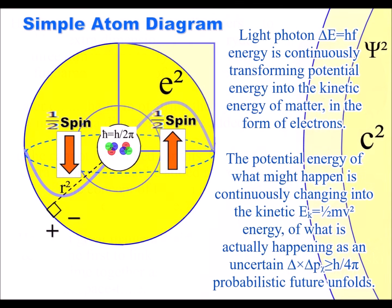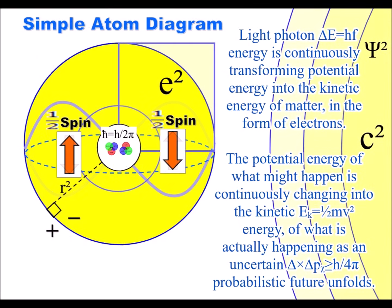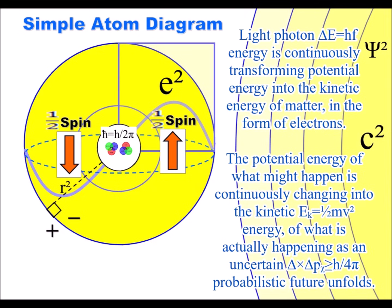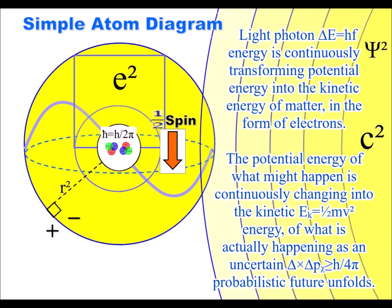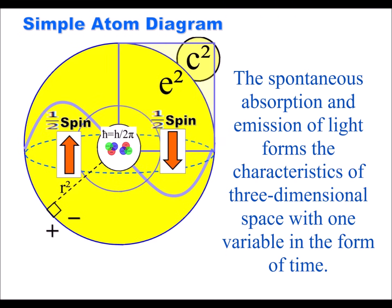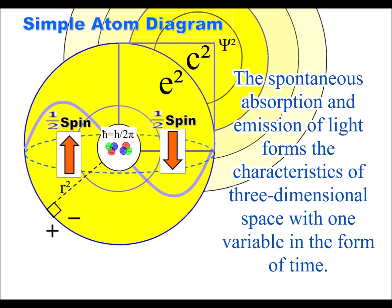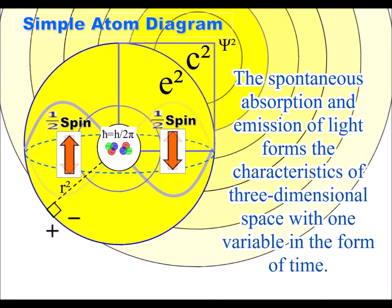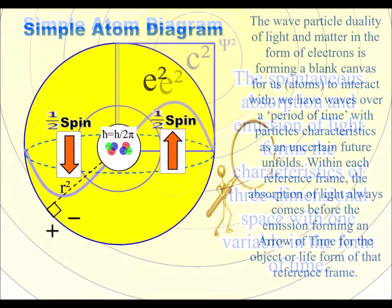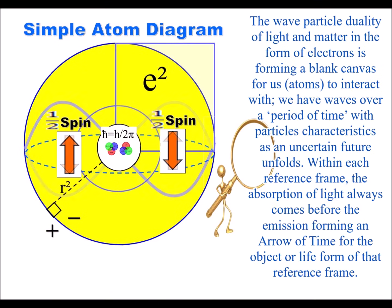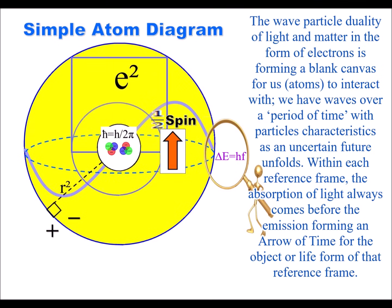This theory explains this by simple geometry, based on a process of spherical symmetry forming and breaking. The interior of a sphere is naturally three-dimensional, with the spherical surface forming an extra dimension that we comprehend and measure as time.